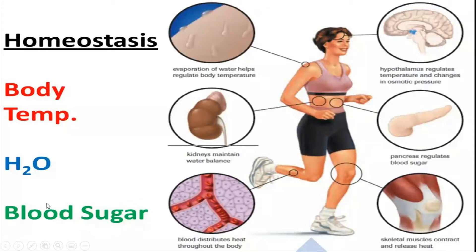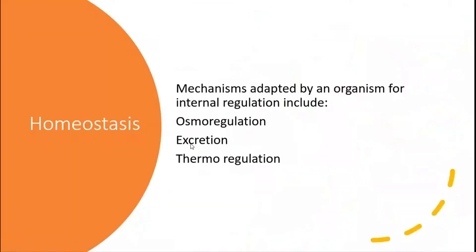Body temperature, water, and blood sugar are important components maintained by homeostasis. Water is a susceptible constituent to homeostasis throughout the body. In the presence of water, different mechanisms perform internal regulation. We will read everything in detail — briefly, in the presence of water, internal regularity is maintained through osmoregulation, excretion, and thermoregulation.